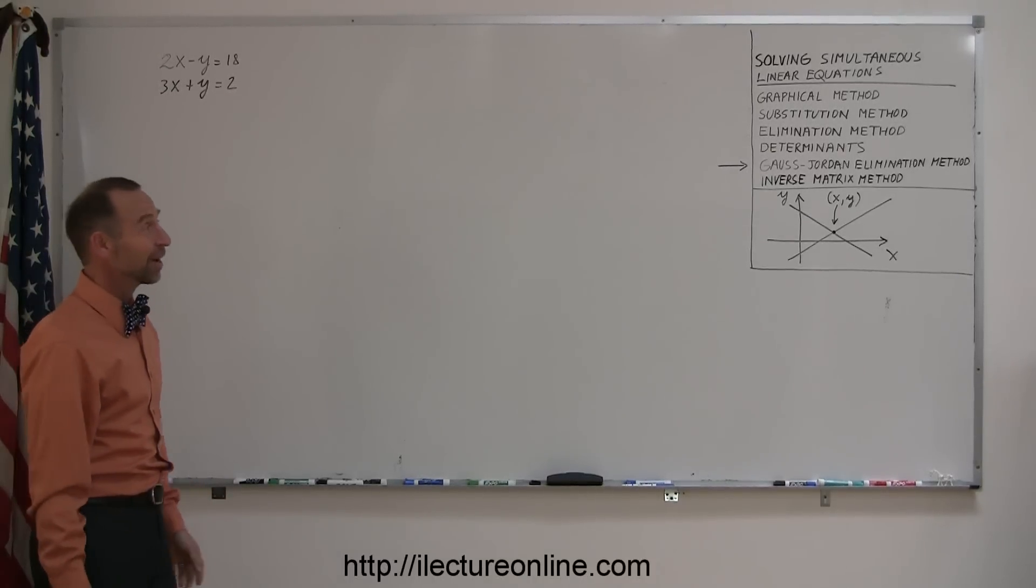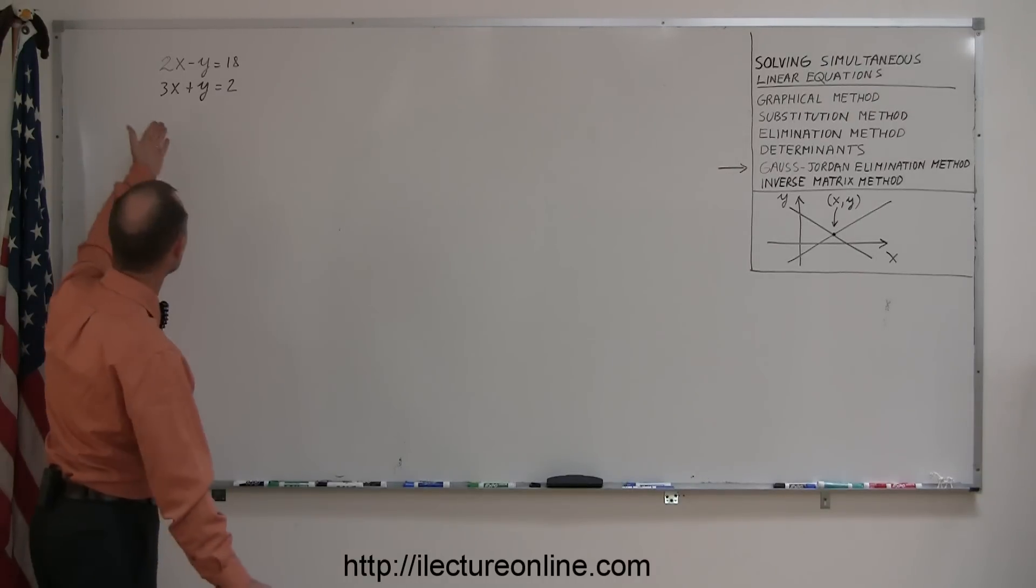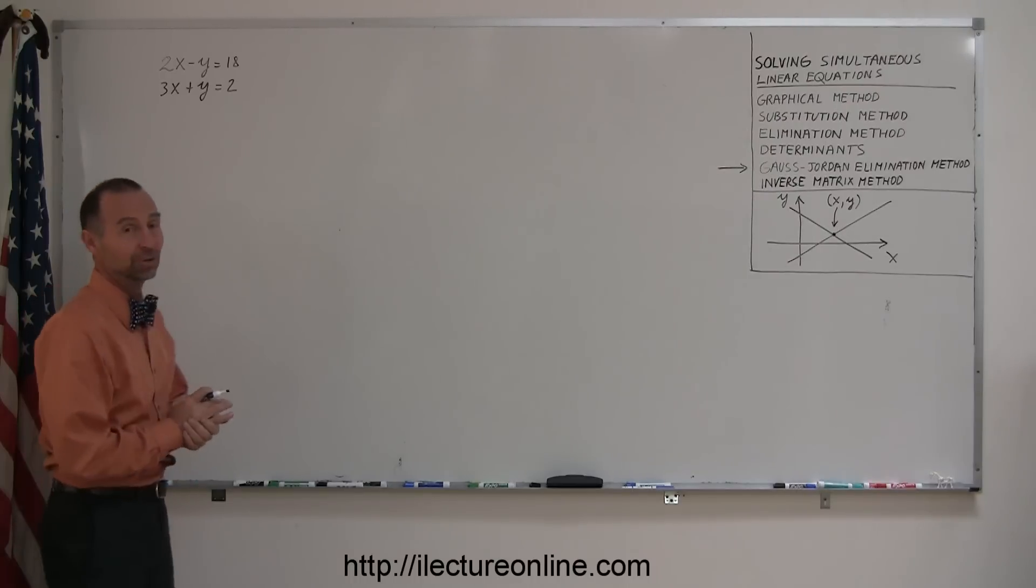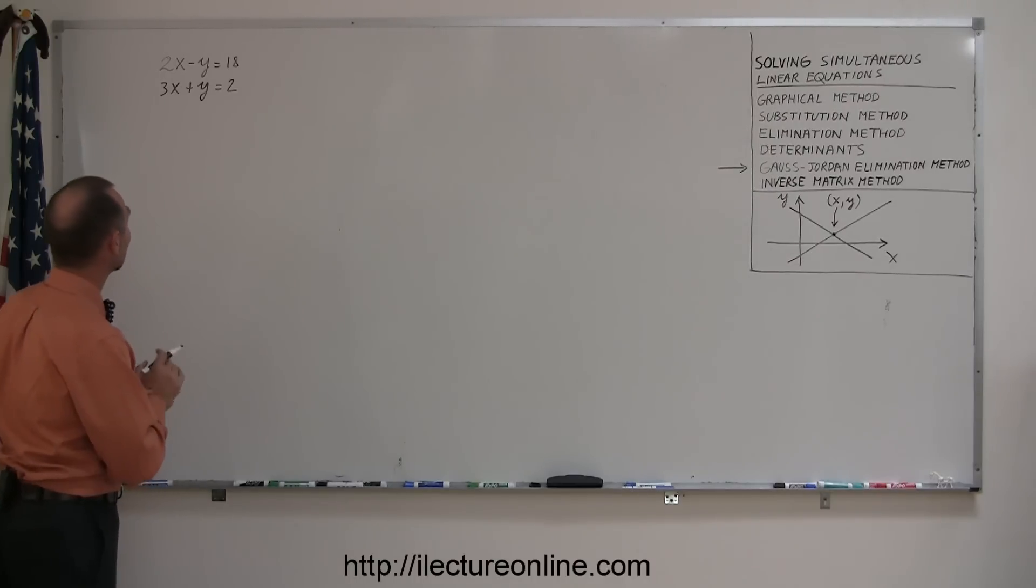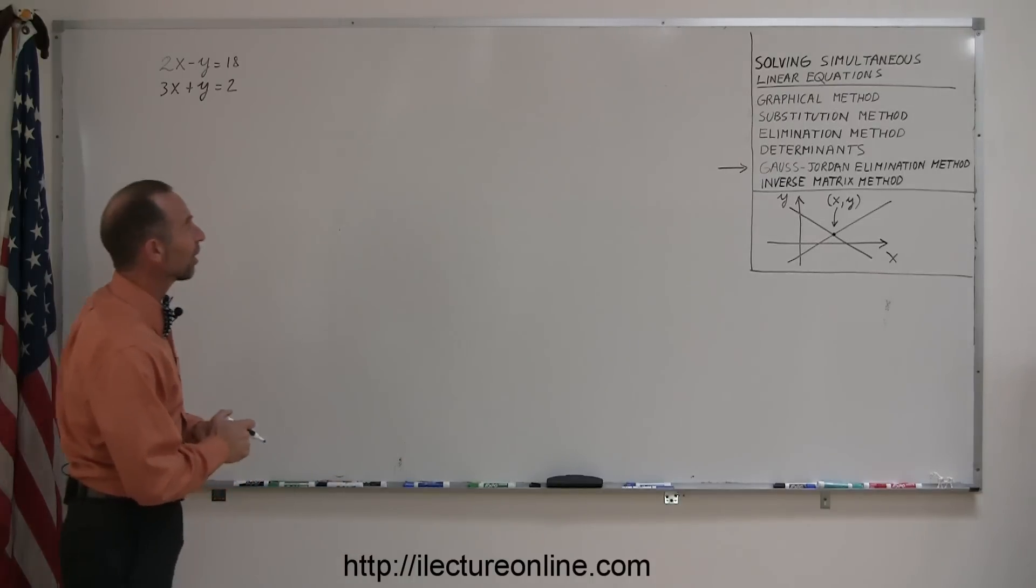All right, welcome to a more exotic way of solving simultaneous linear equations. Here they are, 2x minus y equals 18, 3x plus y equals 2. You look at that and go, very straightforward, and there's a whole bunch of ways in which you already know how to solve this.